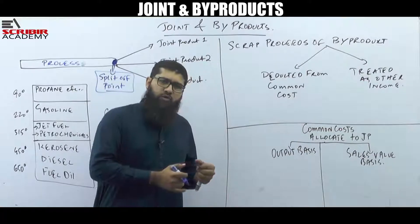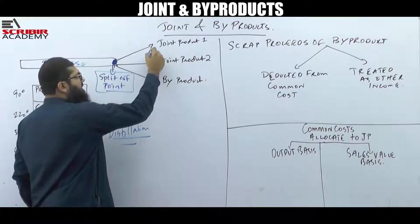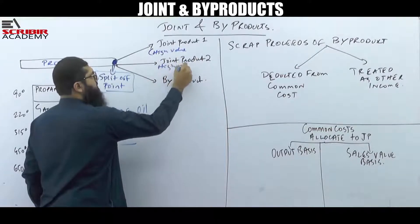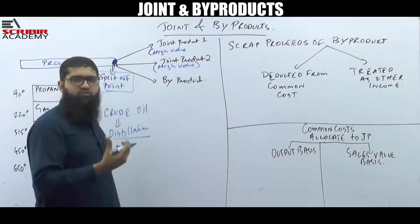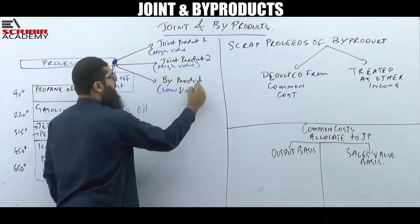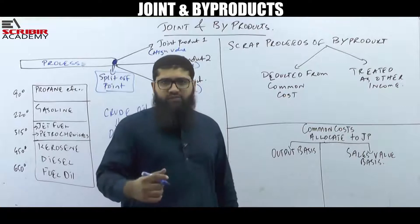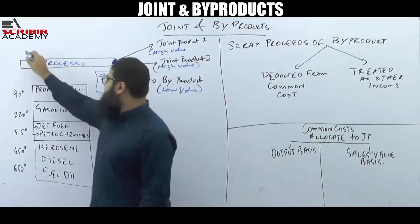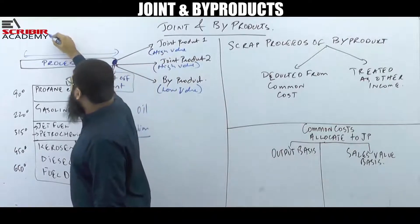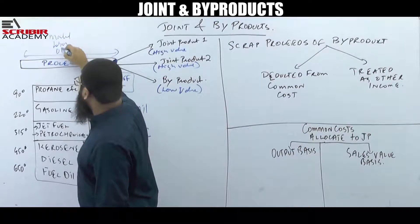What is a joint product and what is a byproduct, and how are they different? Joint products are products which are usually of high value — they are high-value products. If you have low-value products, those are considered byproducts. The costs incurred during the manufacturing process up to the split-off point — whether material, labor, or overhead — are called common costs.